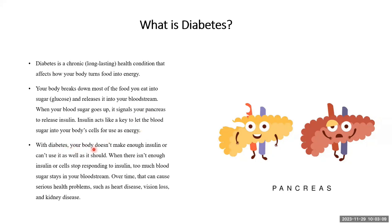With diabetes, your body doesn't make enough insulin or can't use it as well as it should. Our body is either not producing sufficient insulin, or if sufficient insulin is secreted, the cells are unable to use it — both conditions can coexist. When there isn't enough insulin, or cells stop responding to insulin, too much blood sugar stays in our bloodstream. Over time, that can cause serious health problems such as heart disease, vision loss, and kidney disease.